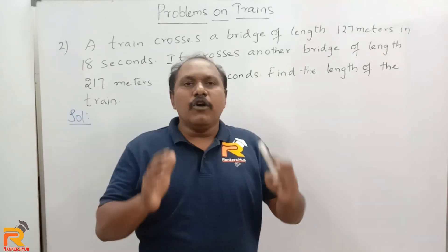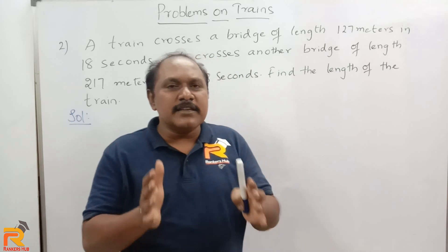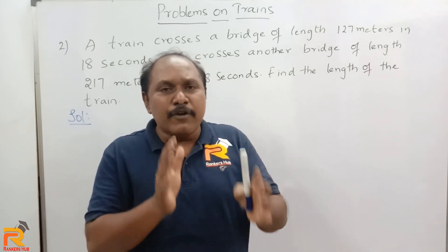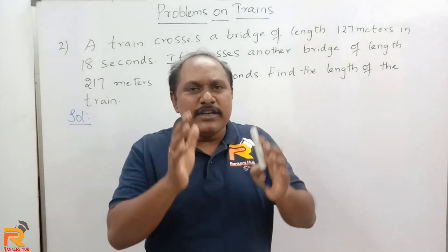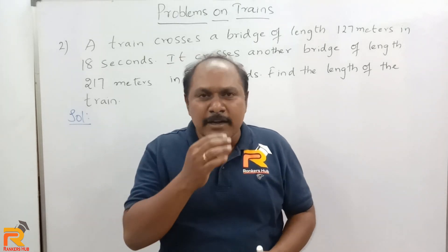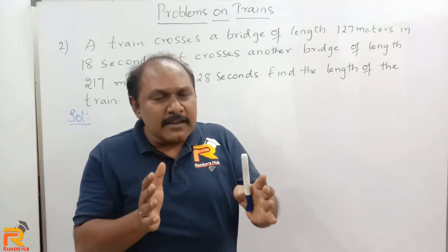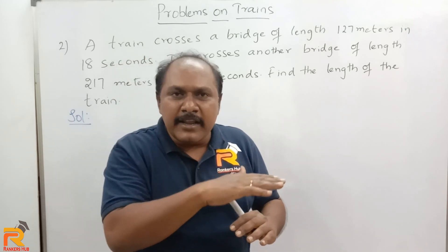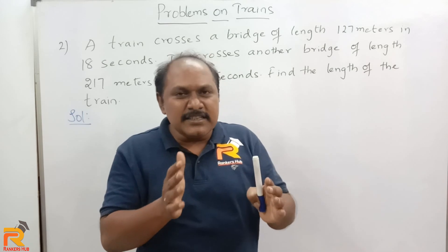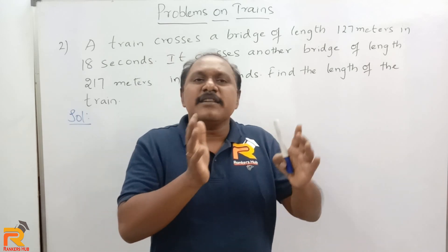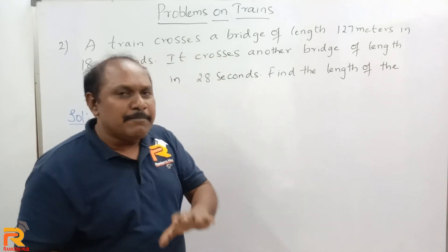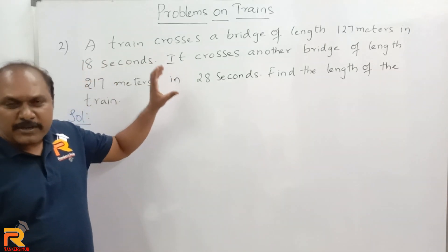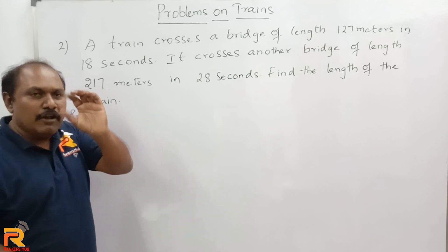Hope all of you understood how to answer this model of question without using the formula Speed equals Distance over Time and performing cross multiplication. Once again the basics: to cross a pole, the distance the train has to travel is the length of the train; to cross a bridge, the distance is the length of the train plus the length of the bridge. Using that basic point, let us see how easily we can solve the next question.